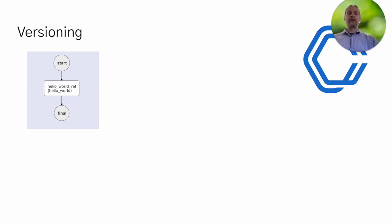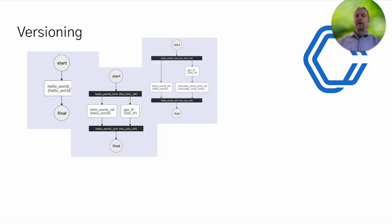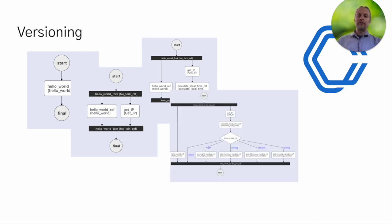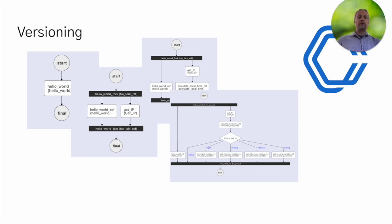Another great thing about Conductor is the ability to version our workflows. You may start off with a very simple workflow — just one task — and then as you build in more features, you end up with more tasks. The great thing about versioning is you can still call version one while version four is live. If you were building data pipelines and one pipeline wasn't ready for a new feature, you could run it on version three while others who are ready can run on version four. Conductor can handle that — you just say 'I want to run data pipeline version three' and you're good to go.